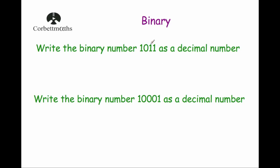For the binary number 1011: writing place headings 1, 2, 4, 8 above it — we have a 1 in the 1s, a 1 in the 2s, and a 1 in the 8s. That gives us 1 + 2 + 8 = 11. For the binary number 10001: place headings are 1, 2, 4, 8, 16 — we have a 1 in the 1s and a 1 in the 16s, so 1 + 16 = 17.